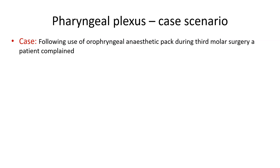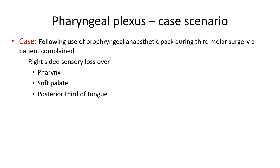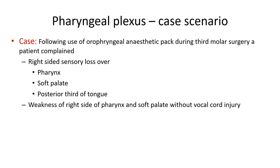Let us start our discussion with a case scenario. Following use of an oropharyngeal anesthetic pack during third molar surgery, a patient complained of right-sided sensory loss over the pharynx, soft palate, and posterior one-third of the tongue, along with weakness of the right side of the pharynx and soft palate without vocal cord injury.